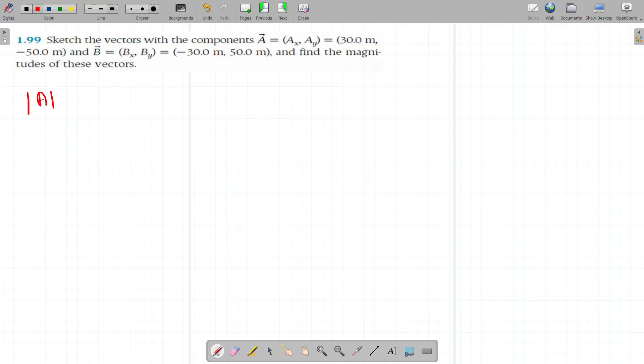Magnitude of A equals square root of Ax squared plus Ay squared. So Ax is 30 and Ax squared plus Ay is negative 50 squared. Use a calculator, you will get 58.3 meters. Same, do for B to find the magnitude of B vector.